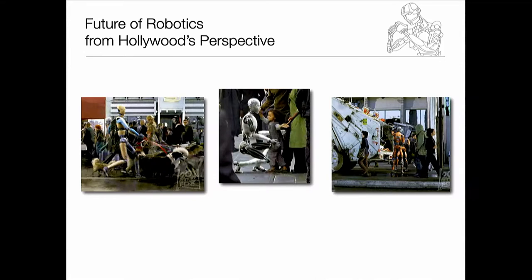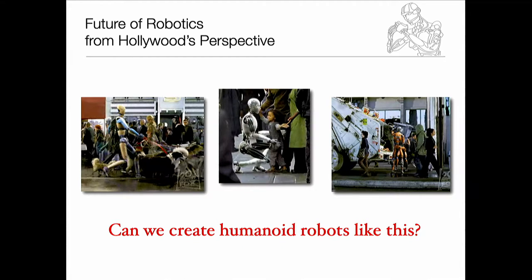It should be able to do the chores we don't like, take care of dog sitting, and most importantly, it should be our friend. Now, you directly recognize how hard this is going to be — think about all the uncertainty in this environment, the safety concerns for that little kid, and the programming complexity of this particular task. So the big question is: can we create humanoid robots like that?